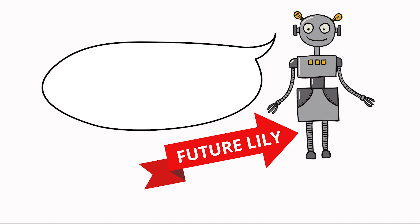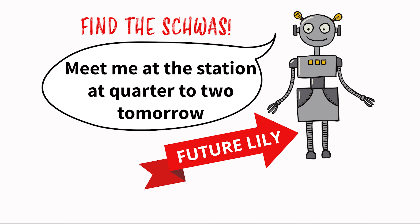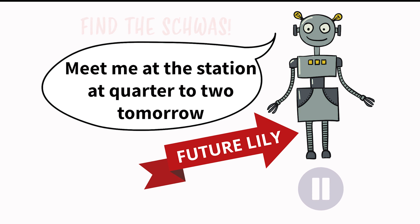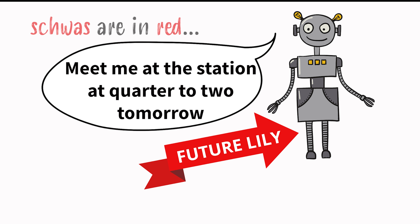This is a message from Lily recorded later — I need to apologize because I completely missed the second example sentence when I filmed this video. Here it is: 'Meet me at the station at quarter to two tomorrow.' In this sentence there are seven schwas in total: the preposition 'at' appears twice and becomes 'ət'; 'to' becomes 'tə'; 'station' has a schwa in the second unstressed syllable; 'quarter' has a schwa in the second unstressed syllable; and 'tomorrow' has a schwa in the first unstressed syllable.